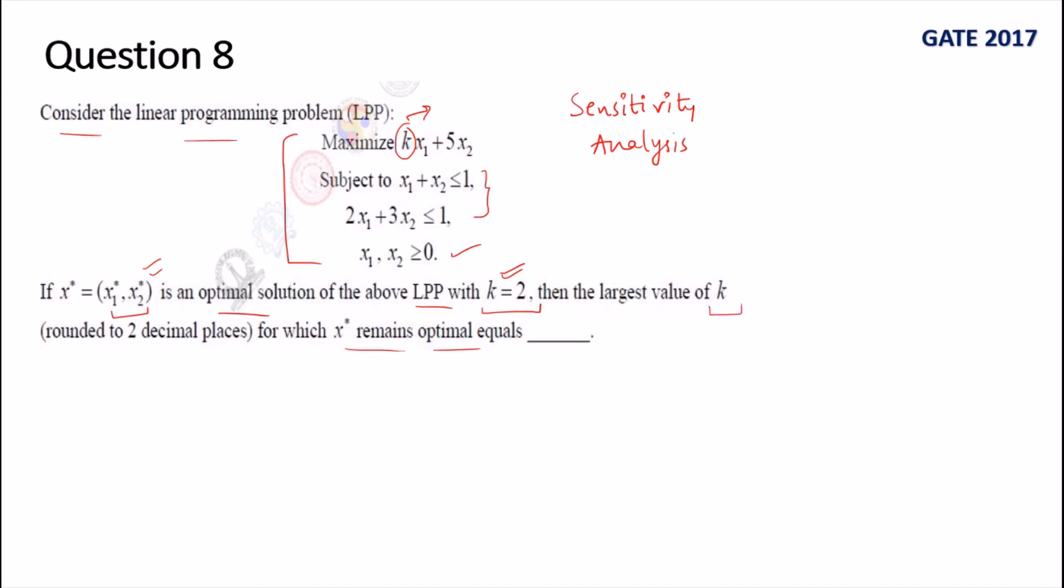They are asking up to what value of k will the same solution remain optimal, because as k's value changes, your optimal solution will change since k is a parameter. In these question papers they don't give you much time, so most questions are asked for two variable problems which we can easily solve graphically. We will solve this graphically. To solve graphically, we have to draw the constraints first. Two constraints are: x1 + x2 ≤ 1, this is line one (1,0) to (0,1).